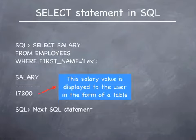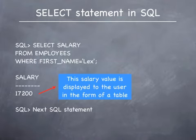First off, here is a query that is written at the SQL prompt. The query reads as: select salary from employees where first name equals Lex. The salary of the employee Lex is being retrieved by the query and the value was 17,200. If queries are written at the SQL prompt, their output is displayed in the form of a table.